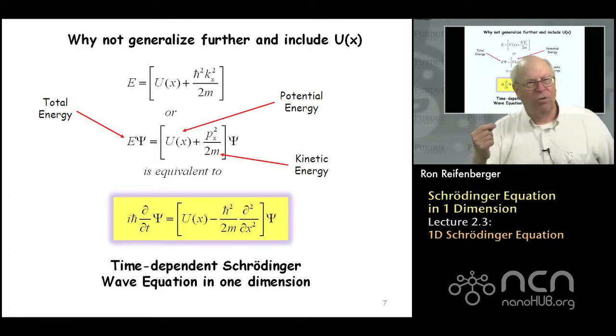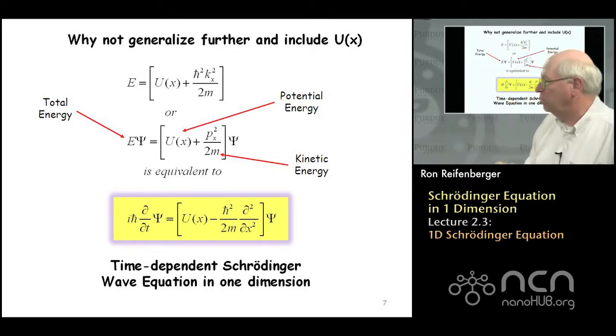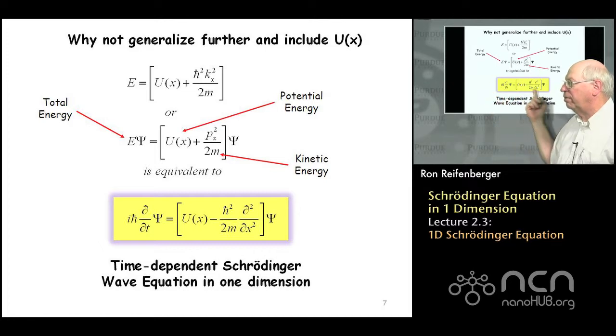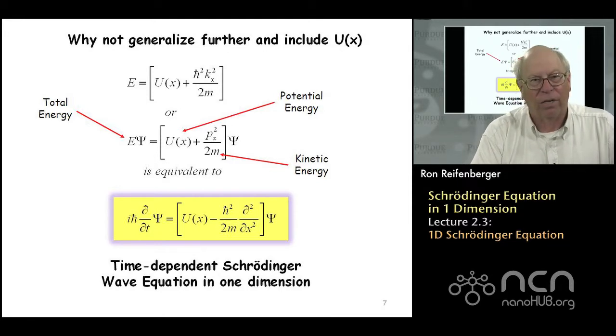But what we've been able to show, if you follow the notes, if you actually sit down and work through those notes, we've been able to show that this equation here is really equivalent to this equation that's boxed in and colored in yellow. And this is Schrodinger's time-dependent wave equation in one dimension.